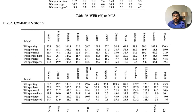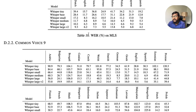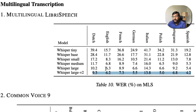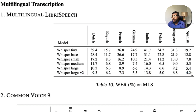The entire picture changes when you get into multilingual aspects. Even for LibriSpeech on the multilingual dataset, v2 outperforms v1. For example, for German, the previous large model gave a WER of 6.6%, while the v2 model gives 5.5% — that's a 1.1 percentage point improvement. You can see similar differences in Spanish and Portuguese.